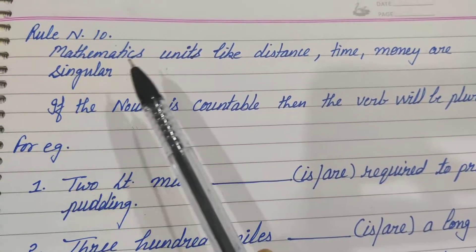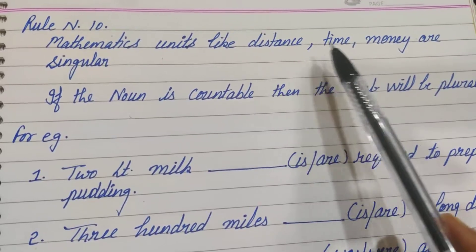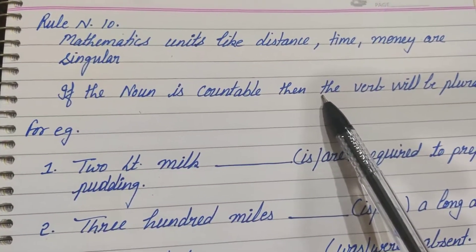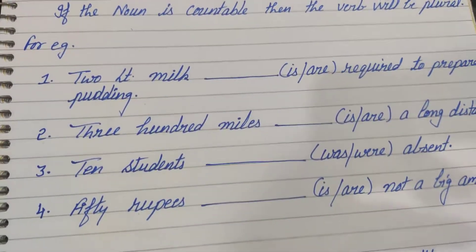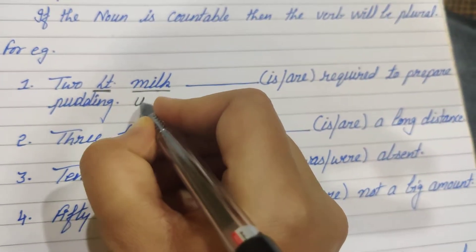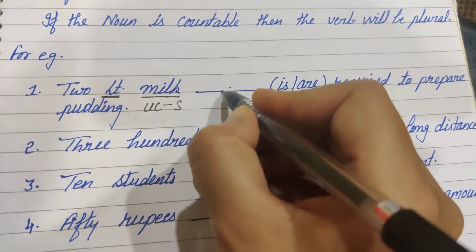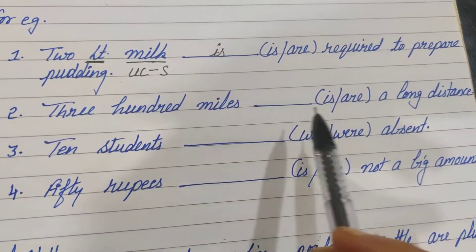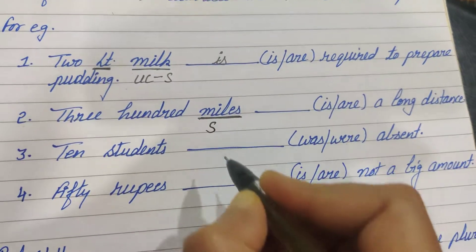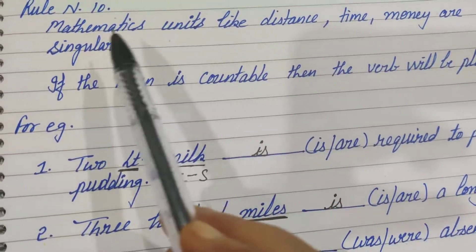Rule number 10 says mathematical units like distance, time, and money are singular. If we are using mathematical units like distance, time, or money, they will remain singular. But if the noun is countable with a mathematical term or number, then the verb will be plural. For example, 'Two liter milk' — milk is uncountable, so we say: Two liter milk is required to prepare pudding. '300 miles' is a unit of distance, so: 300 miles is a long distance.